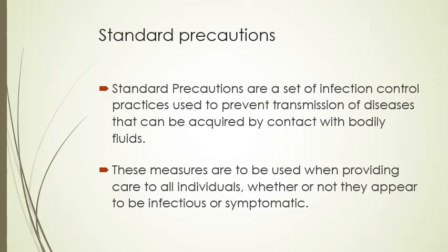Within universal precautions are standard precautions. Standard precautions are a set of infection control practices we use to prevent the transmission of diseases and infections spread through contact with bodily fluids. We are going to use these standard precautions anytime we're providing care to any individual, whether they appear to have some type of disease or illness or not. Universal precautions means we're always assuming they are infectious.